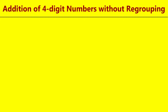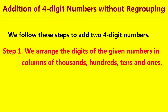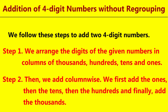Addition of 4-digit numbers without regrouping. We follow these steps to add two 4-digit numbers. Step 1: We arrange the digits of the given numbers in columns of thousands, hundreds, tens and ones. Step 2: Then we add column-wise. We first add the ones, then the tens, then the hundreds, and finally add the thousands.